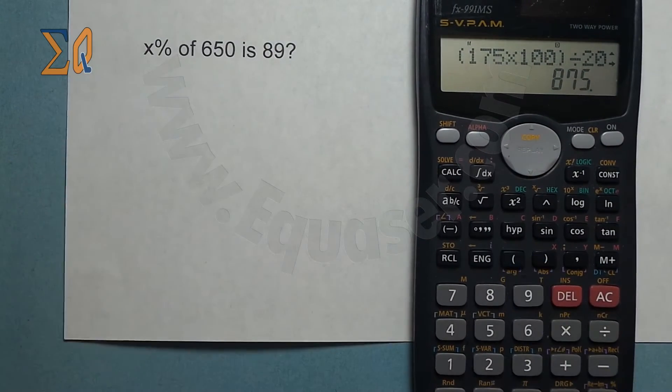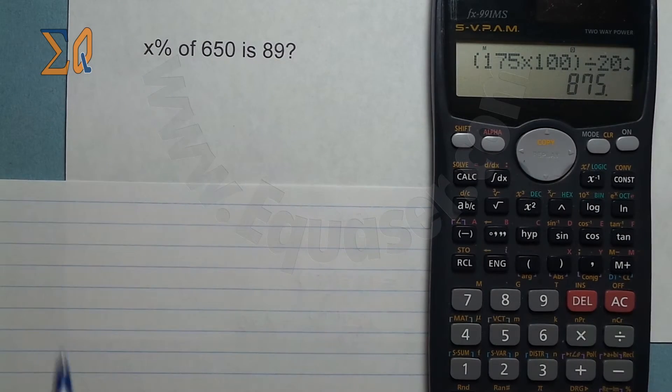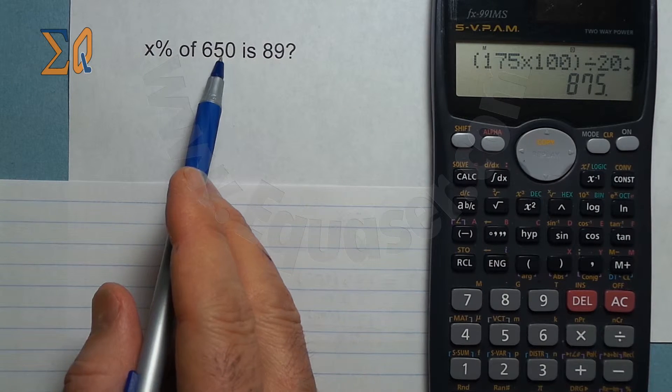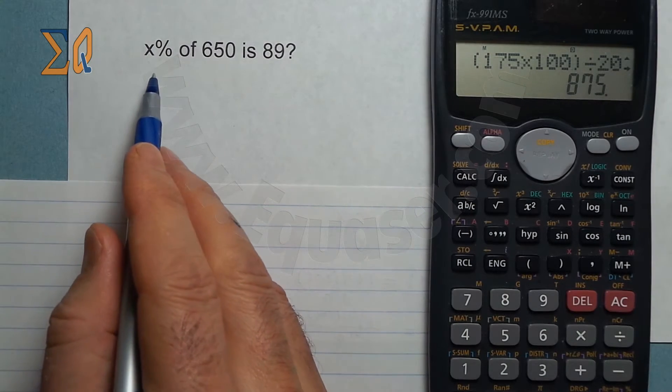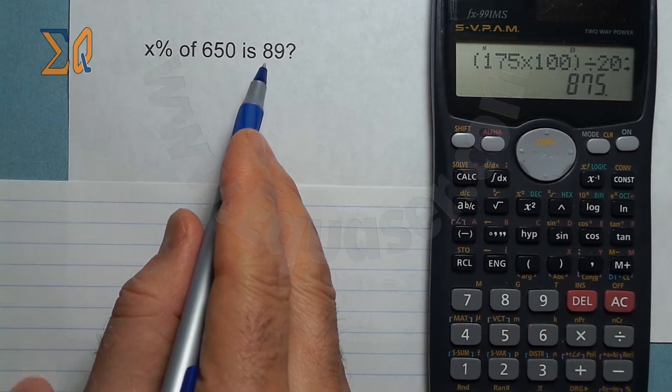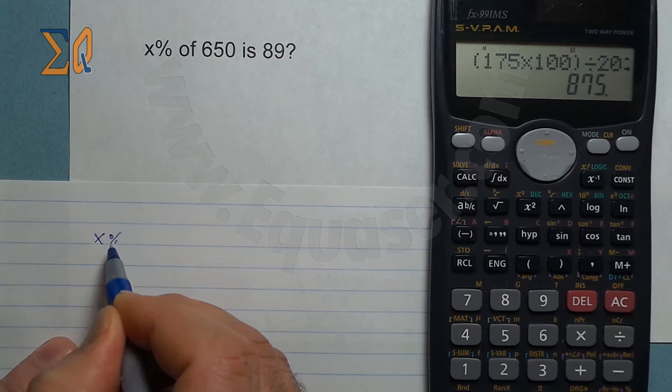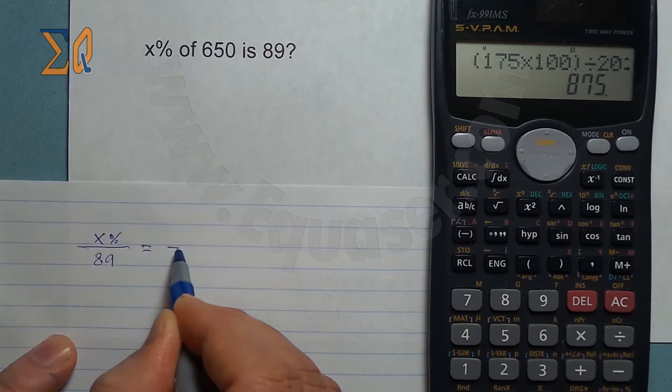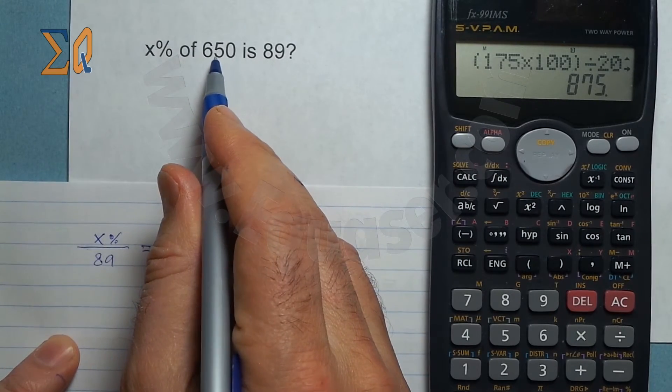This question asks: some percent of 650 is 89. We have to find what percent was it. So as you see, X percent is 89, so what we do is: X percent is 89, equals, this is the whole amount, 650.